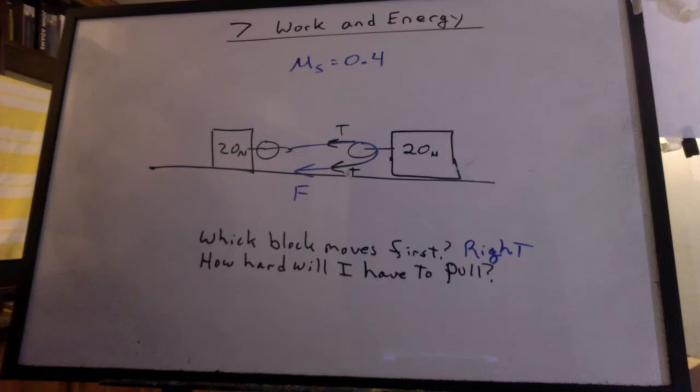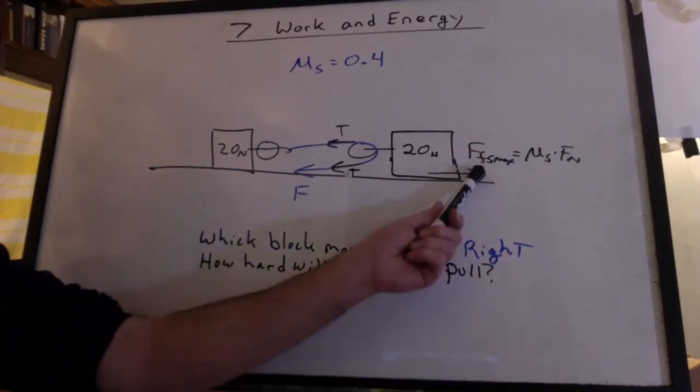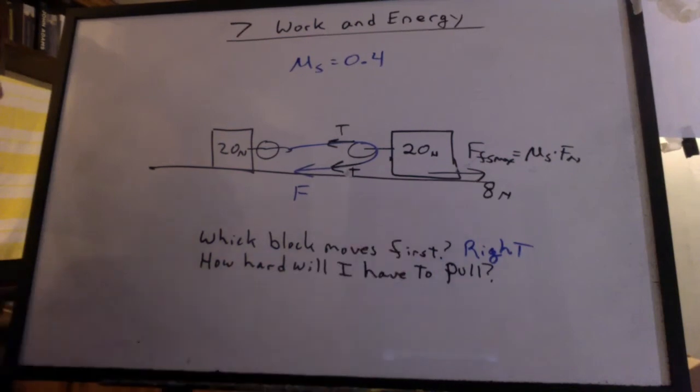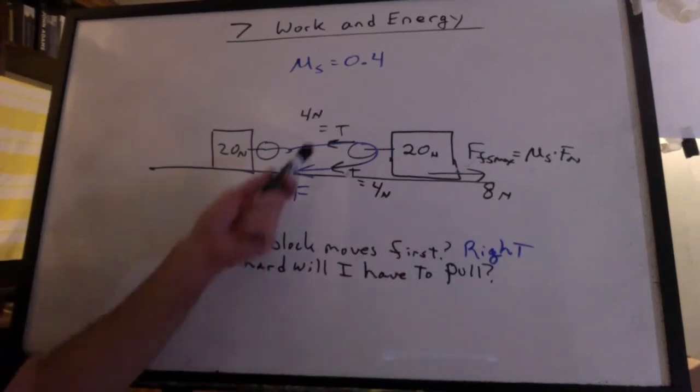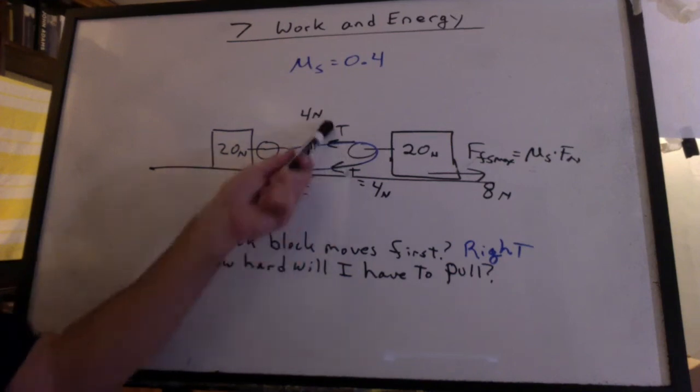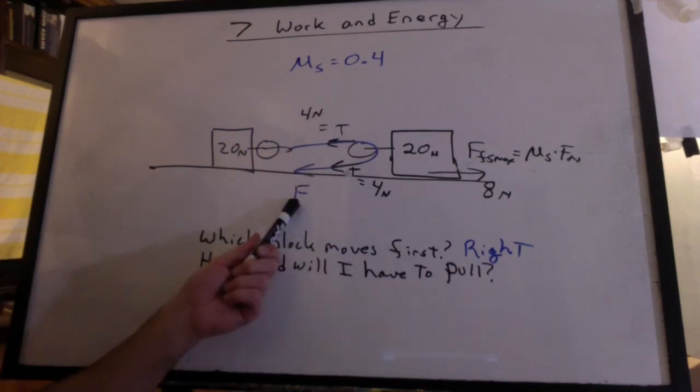Now we can figure out how hard I'd have to pull. The force of friction static maximum is mu S times Fn. That's 8 newtons. And now, since there's two tensions pulling to the left, I only need four on each part. So I'm going to have to pull with 4 newtons.